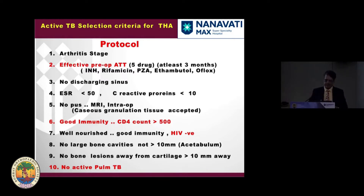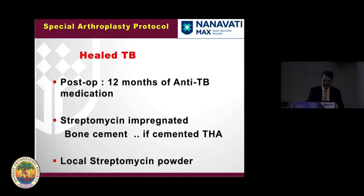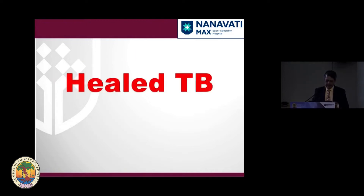The ESR should be showing a good downward progression, and CRP should be less than 10 when you select the case. MRI is a very important criterion. The patient's immunity should be good — CD4 count should be more than 500. The patient should be well-nourished with good immunity and HIV negative. No large bone cavities more than 10 mm from the acetabulum, no bone lesions away from the cartilage beyond 10 mm, no active pulmonary TB, and post-operative anti-TB medication must be given.